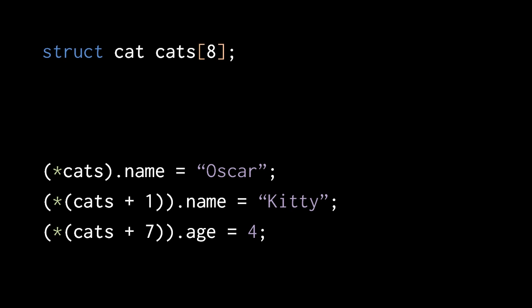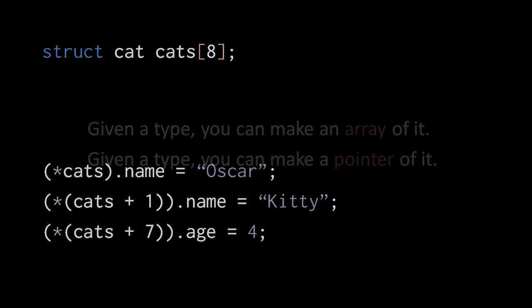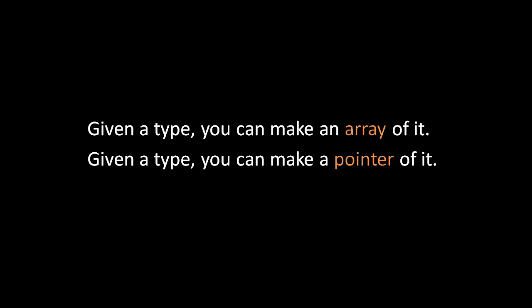If we want a stack-allocated block of cats, we can create an array instead of using malloc. We then use the array in the same fashion, but keep in mind that the block of memory only exists for the duration of the local scope. So far we've created pointers and arrays out of our base types, and now also the custom struct types which we can create.